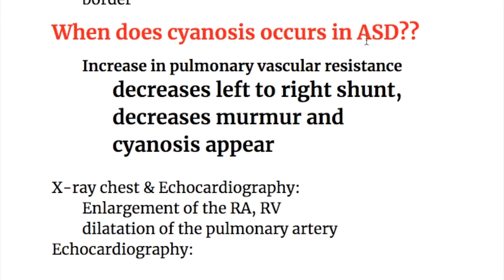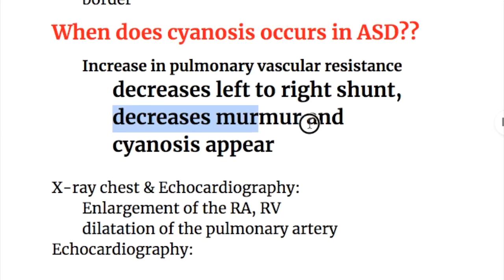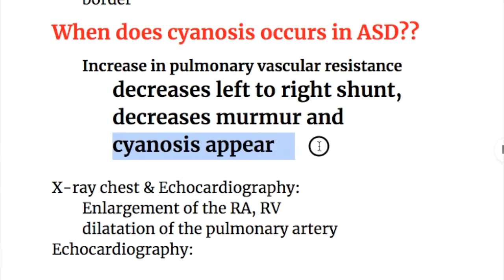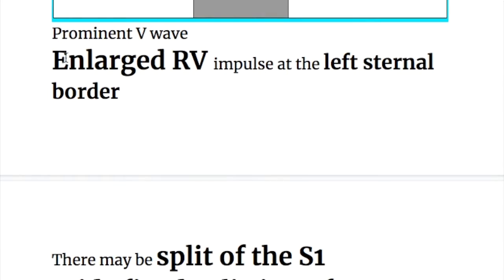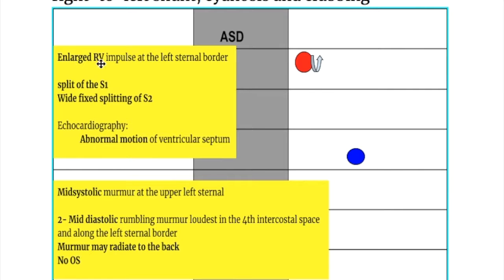Cyanosis in ASD occurs when increased pulmonary vascular resistance decreases the left to right shunt, decreases the murmur, and cyanosis appears. On examination, there is a prominent V-wave in the neck and a large right ventricular impulse at the left sternal border.